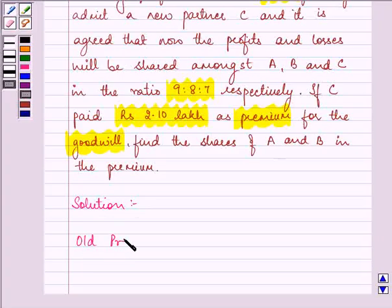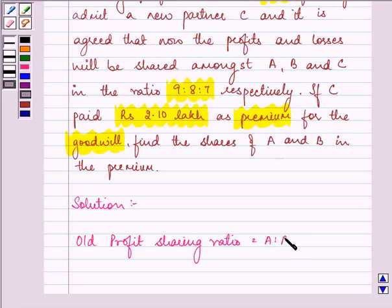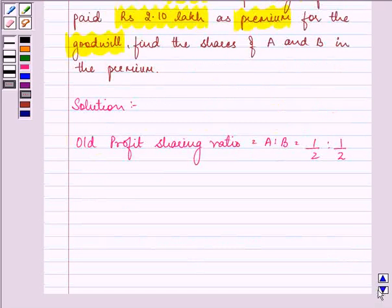Old profit sharing ratio among A and B was 1/2 is to 1/2. That is 1:1.